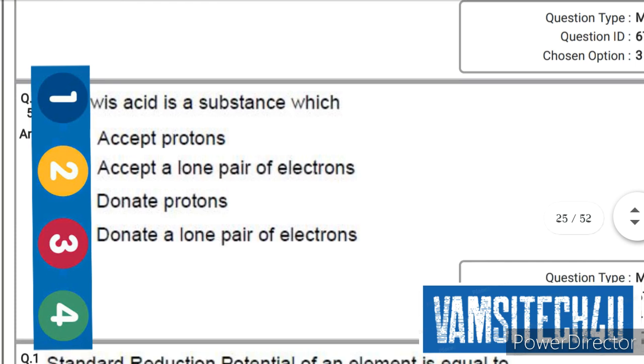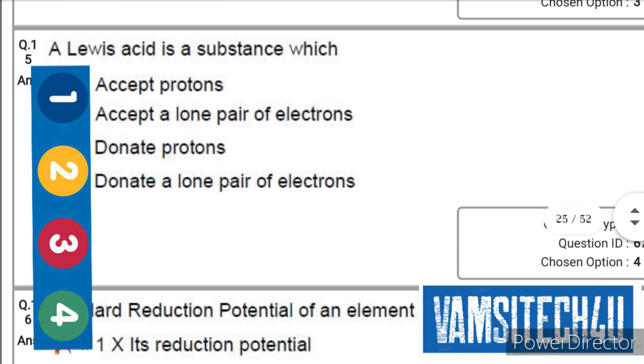A Lewis acid is a substance which... the right option is second one, that is accepts a lone pair of electrons.